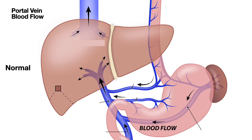Here is the normal anatomy of the portal venous system. The portal vein drains blood from the gastrointestinal tract and also from the spleen. The splenic vein drains blood from the spleen and also from the left portion of the colon via the inferior mesenteric vein. The splenic vein joins the superior mesenteric vein to form the portal vein.